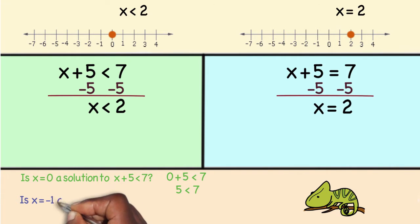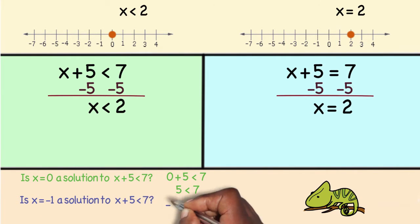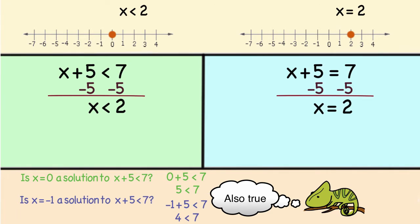Negative 1 is less than 2. If I check that here, negative 1 plus 5 less than 7. Negative 1 plus 5 is 4. 4 is less than 7. That's also true. So I found a second answer.